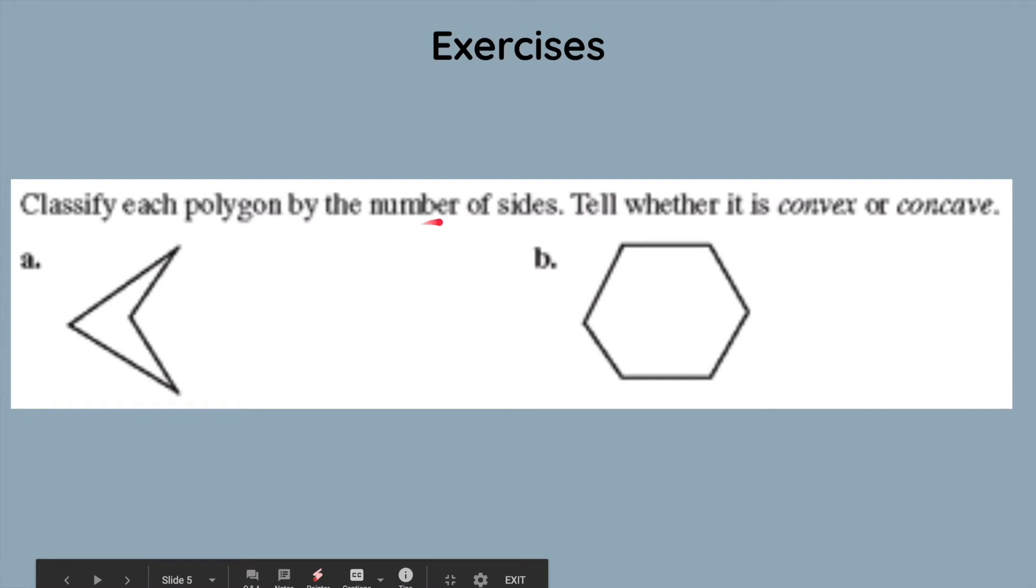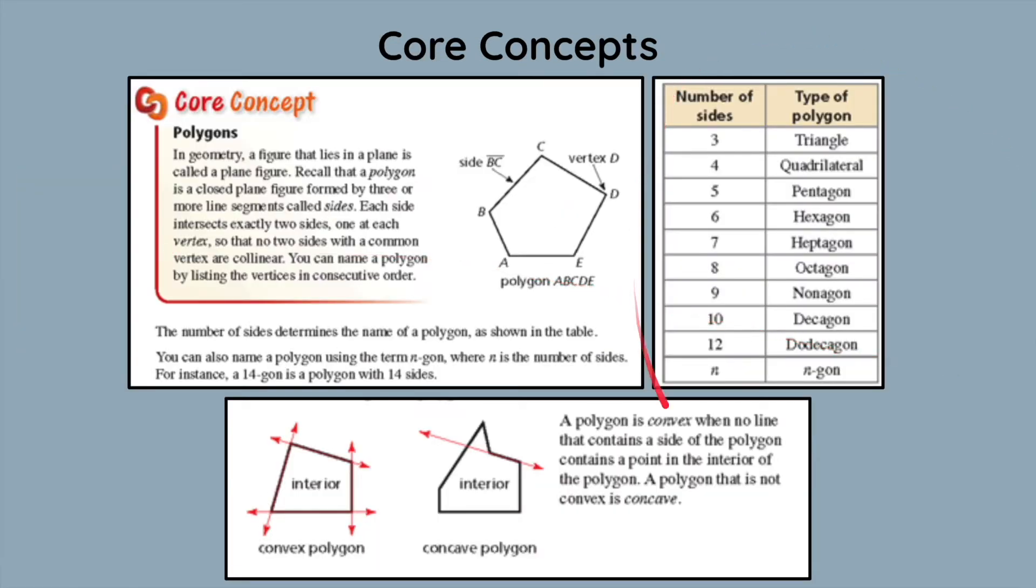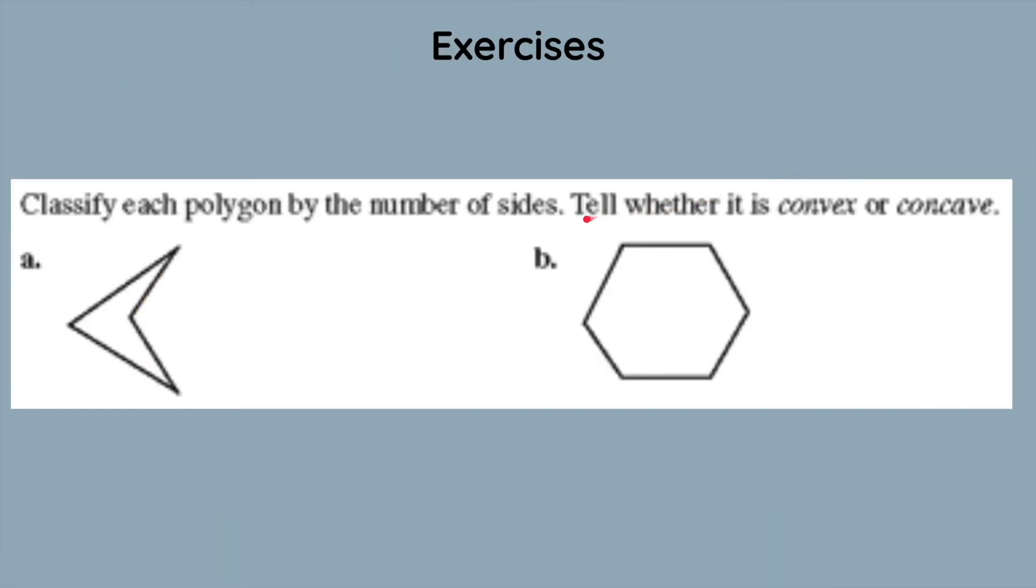We will classify each polygon by the number of sides and then tell whether it is convex or concave. Looking at this figure right here, we can count one, two, three, four sides. And by remembering the diagram in this previous example right here, four sides would be a quadrilateral. If it's convex or concave, we remember to use lines, extend the lines from the sides. So let's just do that now for both of them. Looking here, we can see that the line intersects with the interior, which makes it concave.